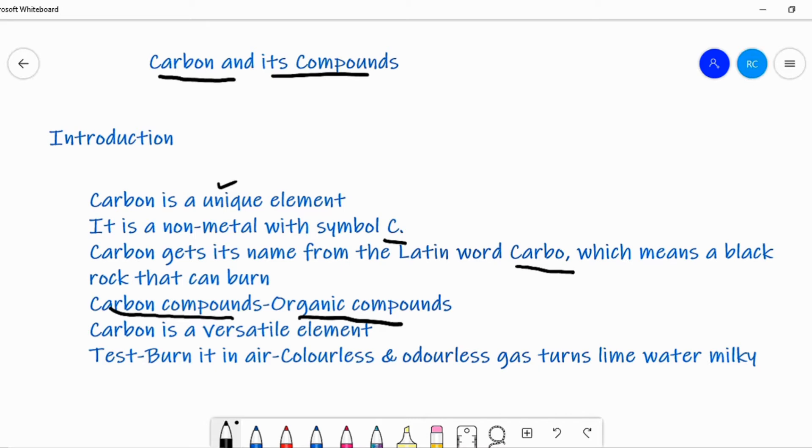The fuels such as wood, coal, kerosene, LPG, natural gas, CNG, petrol, diesel, etc. which we use to cook our food and to run vehicles are made up of carbon compounds.